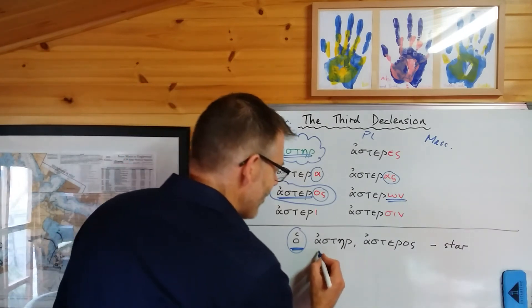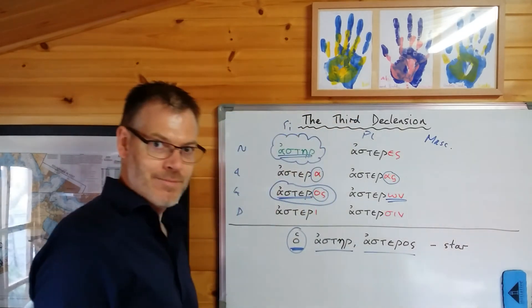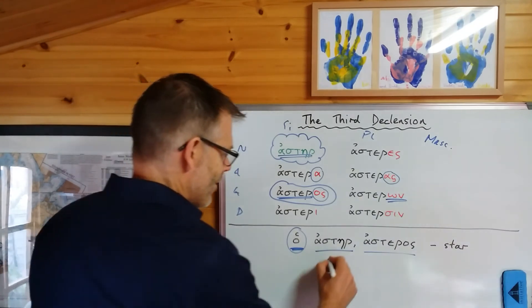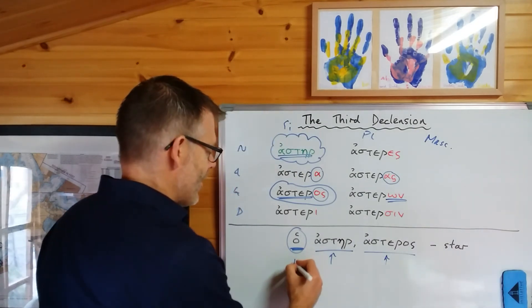You see the article telling you what gender it is, because masculine and feminine are the same, so you don't know. You see the nominative singular, and you see the genitive singular, because you need all three to tell you nominative, the stem that features everywhere else, and the gender.